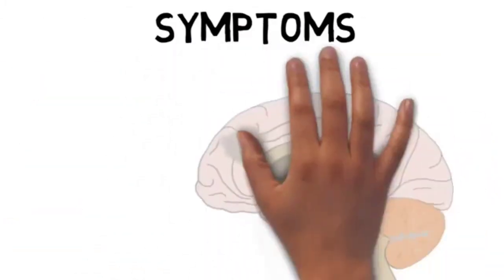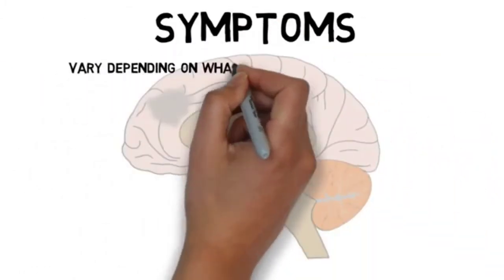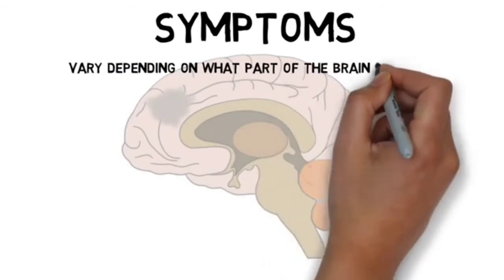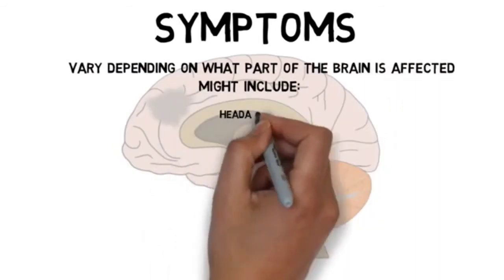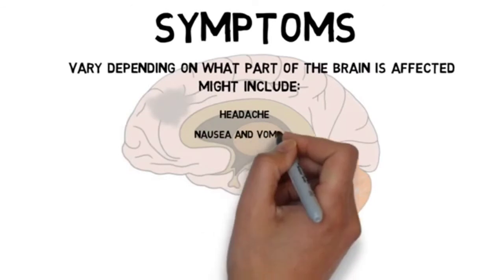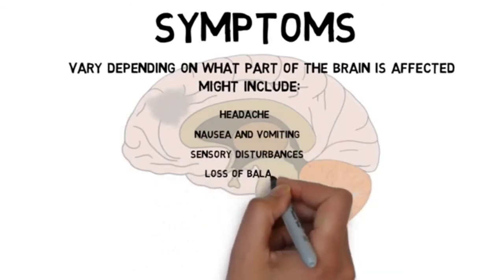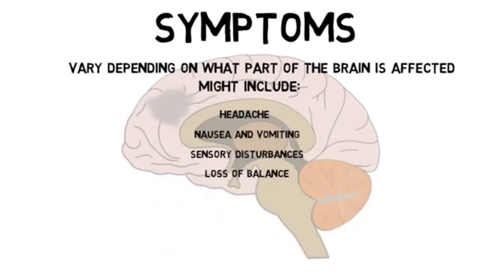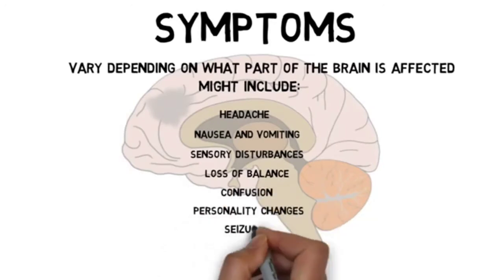The symptoms of brain tumors vary depending on what part of the brain is impacted, and thus from case to case, but some common symptoms include headache, nausea and vomiting, sensory disturbances like blurred vision, loss of balance, confusion, changes in personality, and seizures.